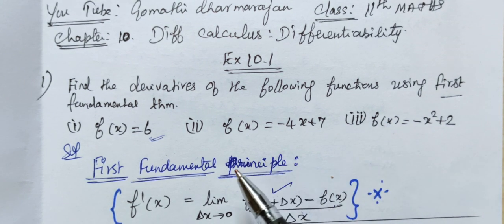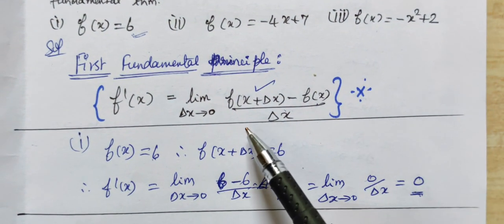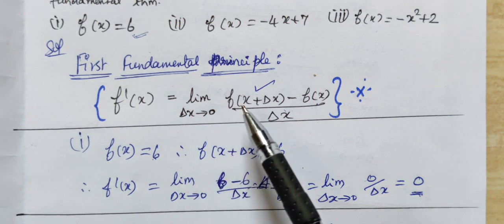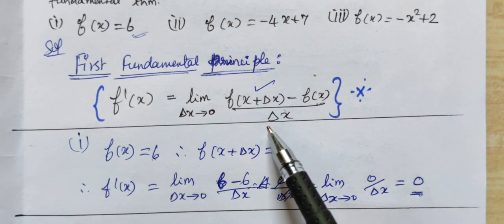First question: f of x equal to 6, then subdivision 2 and subdivision 3. First fundamental theorem: f'(x) = limit as delta x tends to 0 of [f(x + delta x) - f(x)] / delta x.